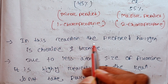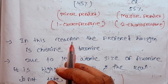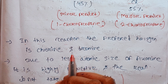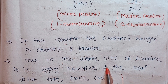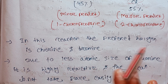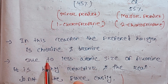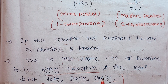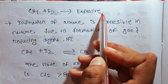This reaction is preferred with halogen chlorine and bromine, due to the less atomic size of fluorine — it is highly reactive and the reaction does not take place easily. So we know that fluorine, chlorine, bromine, iodine — we don't use fluorine because this reaction is highly reactive. The reaction CH4 plus F2 is explosive.